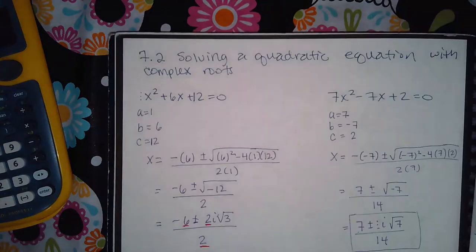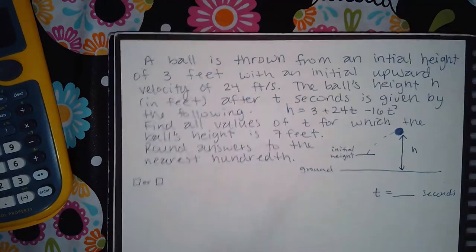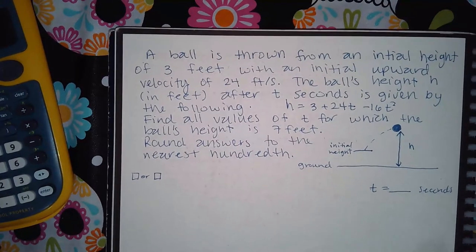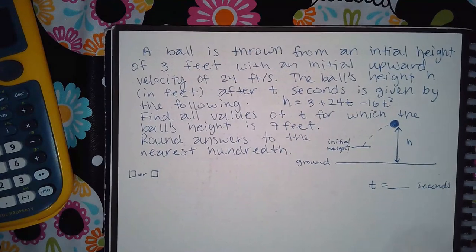This is actually 7.2, solving a word problem using a quadratic with rational solutions, but it's part two. So there's different kinds of examples you'll get and this is another type that you'll see.